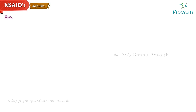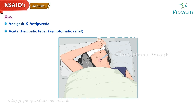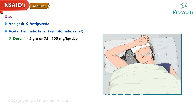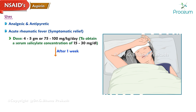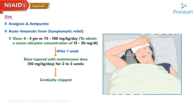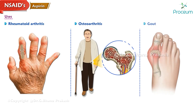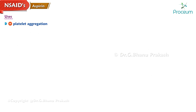Uses: Aspirin is used as an analgesic and antipyretic. In cases of acute rheumatic fever, it is used for symptomatic relief at a dose of 4 to 5 grams or 75 to 100 milligrams per kilogram per day to obtain a serum salicylate concentration of 15 to 30 milligrams per deciliter. After one week or after symptom relief, the dose is tapered with maintenance doses of 50 milligrams per kilogram per day over 2 to 3 weeks and gradually stopped. It is also used for rheumatoid arthritis, osteoarthritis, and gout, and as an inhibitor of platelet aggregation.